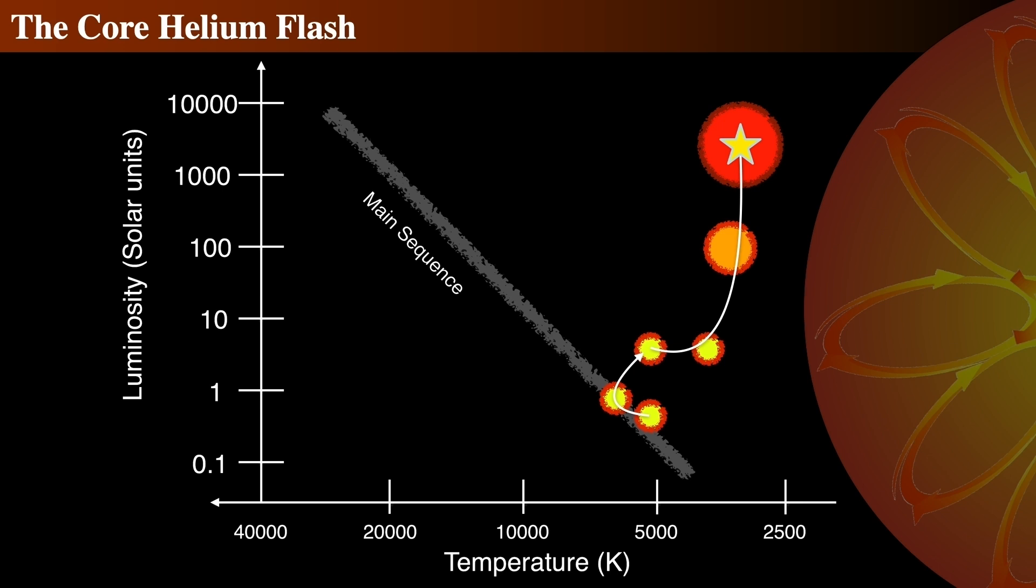For stars of the lower mass bracket, as the helium core continues to collapse during evolution up to the tip of the red giant branch, the core becomes increasingly electron degenerate. Furthermore, significant neutrino losses from the star's core before reaching the tip of the red giant branch result in a temperature inversion near the center, cooling it relative to the layers above where the hydrogen shell burning is happening.